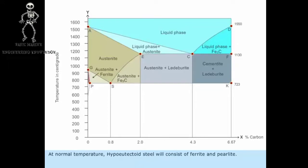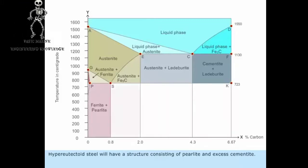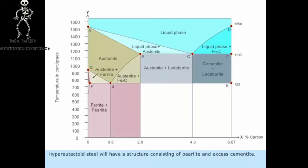At normal temperature, hypoeutectoid steel will consist of ferrite and perlite. Hypereutectoid steel will have a structure consisting of perlite and excess cementite.